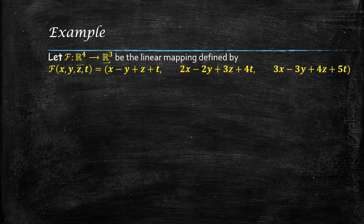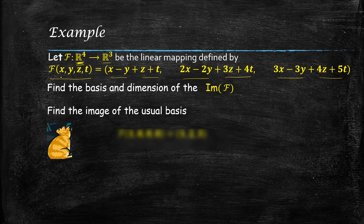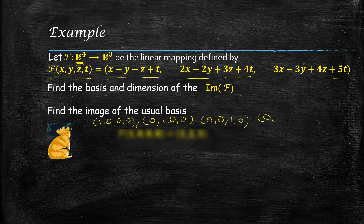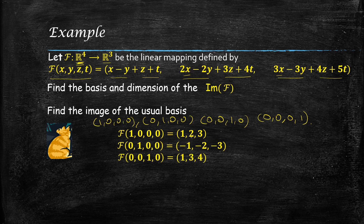Let us explain with an example. Let F be a linear mapping from R⁴ to R³. Our first question: find the basis and dimension of the image of F. Think of the domain basis — the 'cat' — as the standard basis of R⁴: {(1,0,0,0), (0,1,0,0), (0,0,1,0), (0,0,0,1)}. We compute: F(1,0,0,0) = (1,2,3), F(0,1,0,0) = (−1,−2,−3).